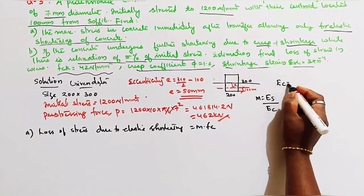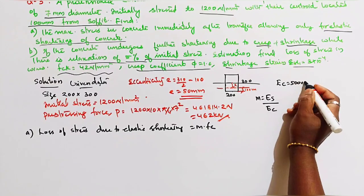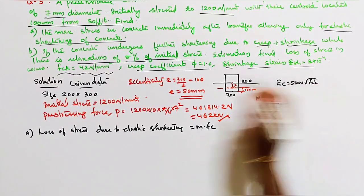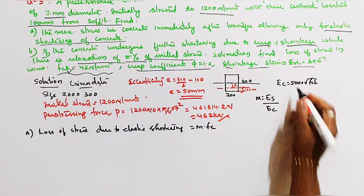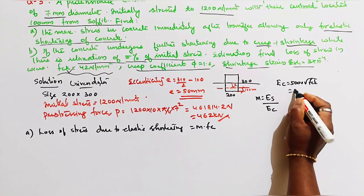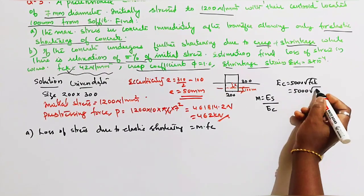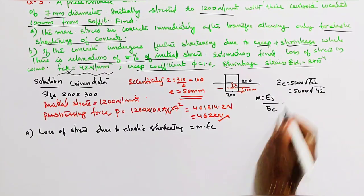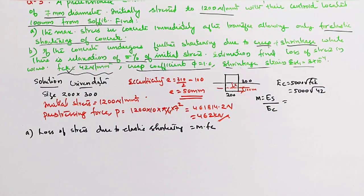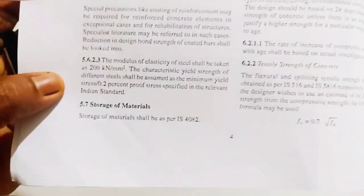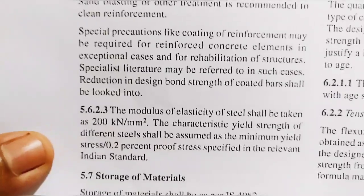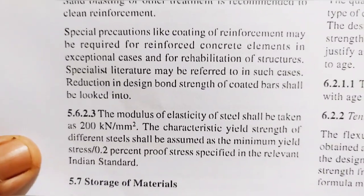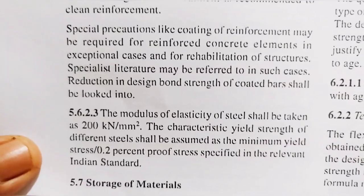EC = 5000 × √FCK = 5000 × √42. From IS 1343:2010, page 4, modulus of elasticity of steel shall be taken as 200 kN per mm square, which equals 2 × 10⁵ N per mm square.